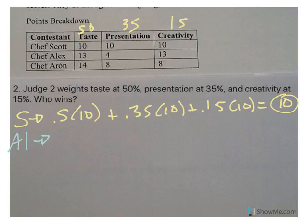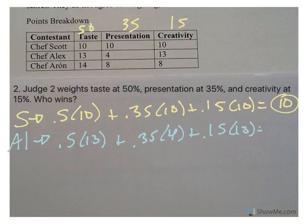Okay, Chef Alex, 50% times 13 plus 35% times 4 plus 15% times 13 gives Chef Alex a score of 9.85.